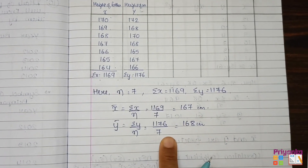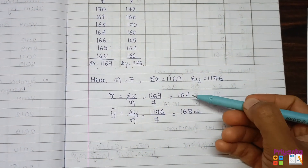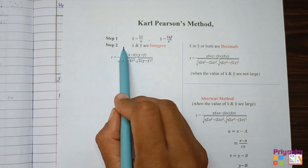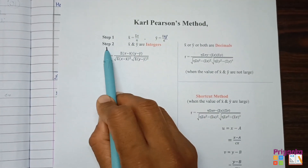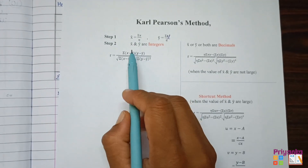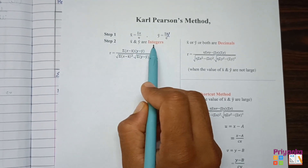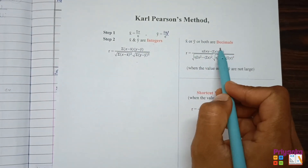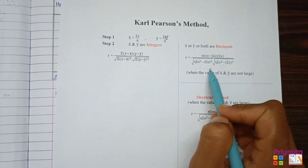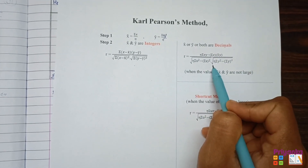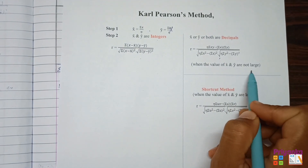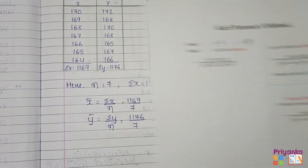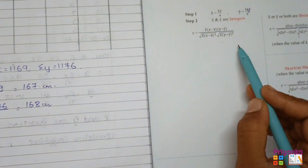The answers for x-bar and y-bar came out as integers, so as shown in the formula step, we use the integer formula. Since x-bar and y-bar are integers (not decimals), and the values are not too large, we proceed with the direct integer formula rather than the decimal or shortcut method.